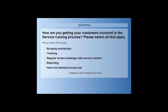The third question is really about how you're getting people involved — how you're getting customers involved in the catalogue process. Are you using workshops, training, or review meetings, or haven't you begun yet? This is probably one of the most fundamental parts of service level management. The most difficult thing is getting people involved, getting them engaged and on board, and getting them to participate, because people will always find ways of resisting this type of change for different reasons.